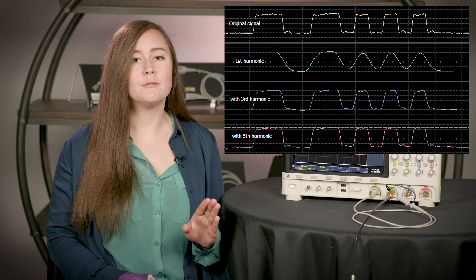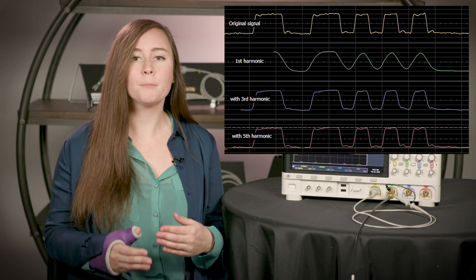But the first, third, and fifth harmonic are combined in the pink trace and have faster edges, crisper corners, and even more detail on the top and the bottom of the waveform. The higher the probe bandwidth, the more detailed your waveform is going to become because the more harmonics can be captured.